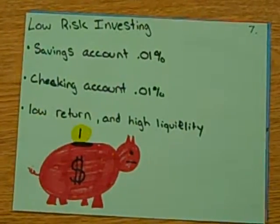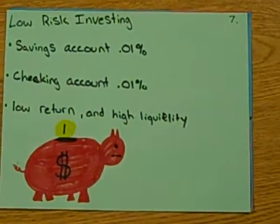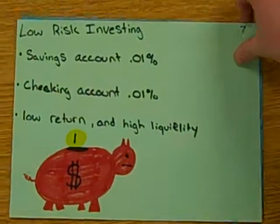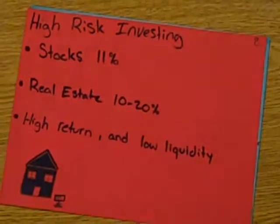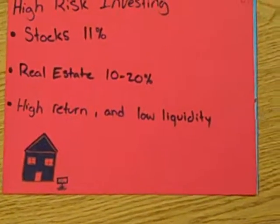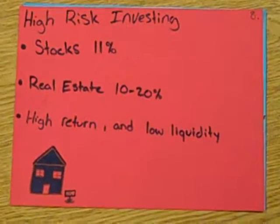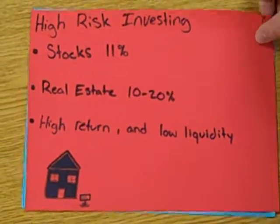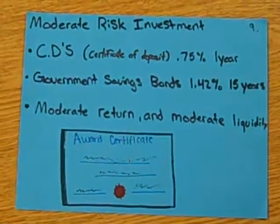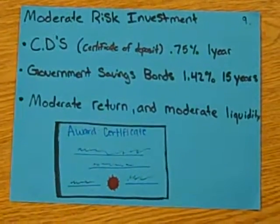Low risk investing is usually just savings accounts and checking accounts with low return and high liquidity, meaning that you can get your money quicker, faster. High risk investing — usually stocks, real estate, and whatnot — with high return and low liquidity. Moderate risk investments include certificates of deposits and government savings bonds, with about medium everything.